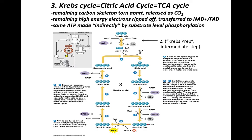The third stage is the Krebs cycle, also known as the TCA cycle (tricarboxylic acid cycle) or citric acid cycle. To get carbons and electrons from glucose into the Krebs cycle, the acetyl group combines with the four-carbon Krebs cycle intermediate oxaloacetic acid (OAA). Joining the two carbons to OAA gives the first intermediate, citric acid — hence the name citric acid cycle. Coenzyme A is released and recycled. Then in a stepwise process, each step catalyzed by a different enzyme, the carbon skeleton is ripped apart.